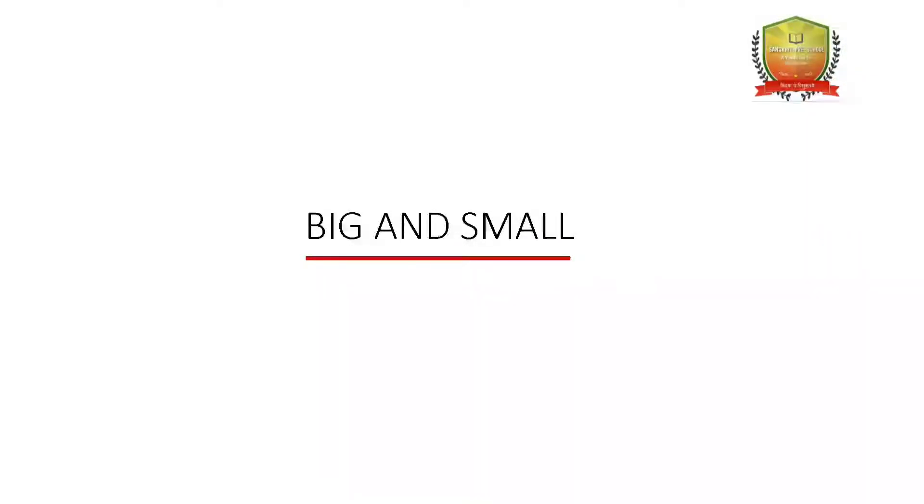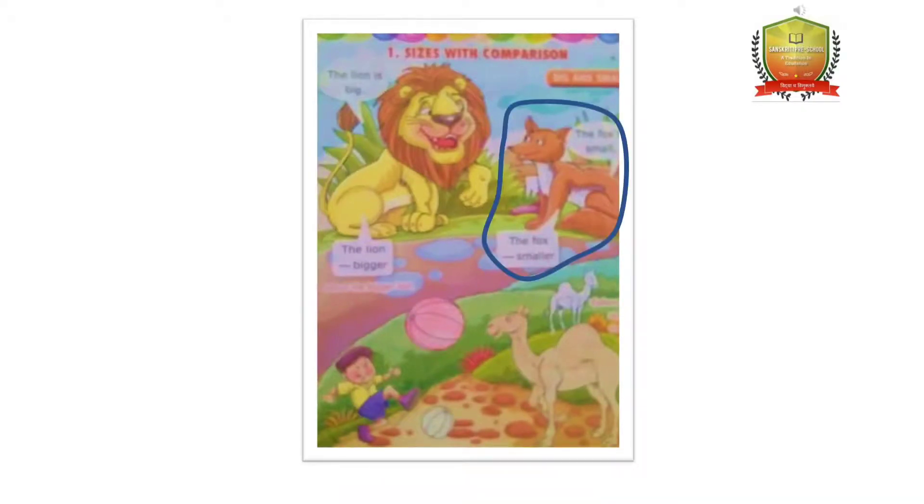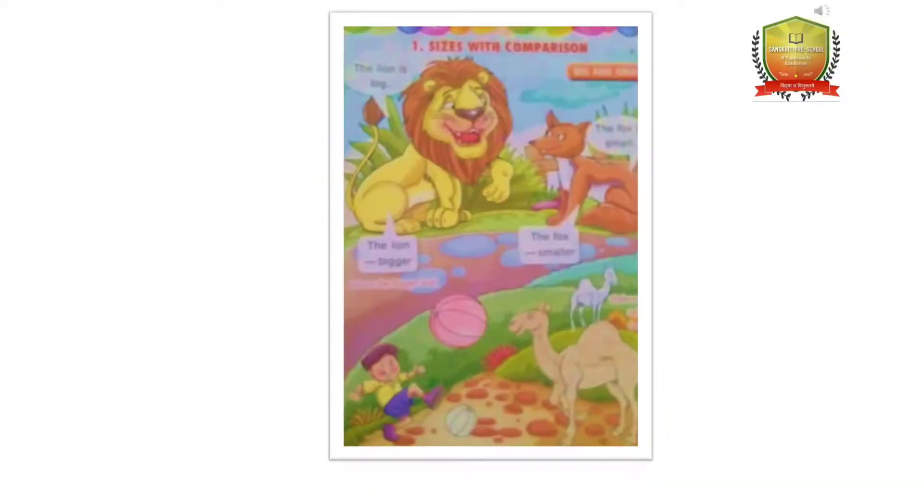In your book, you can see, in this picture, the lion is big and the fox is small. So, you can see, lion is bigger than fox, and fox is smaller than lion.